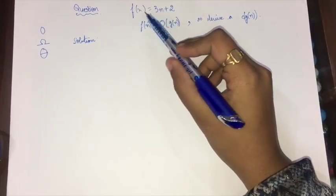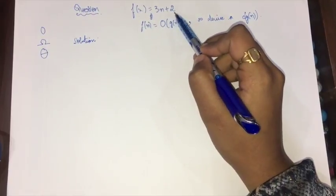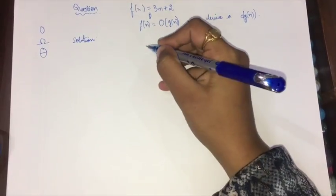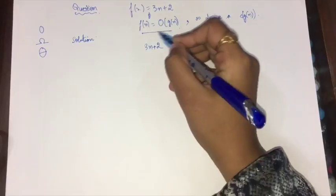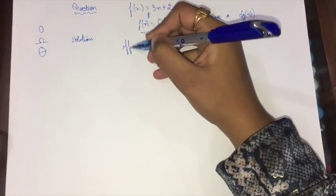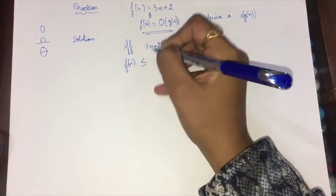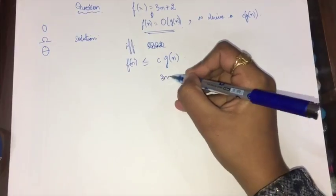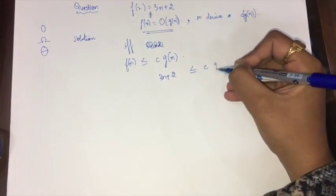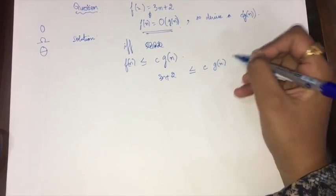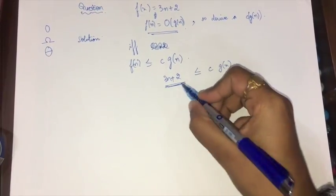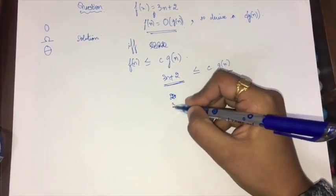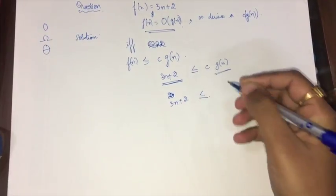If we are given a function f(n) = 3n + 2 and we have to find g(n), how will we find it? We know the condition for Big-O to be satisfied is if and only if f(n) is less than or equal to some constant c times g(n). So 3n + 2 must be less than or equal to c·g(n). Since f(n) is linear, g(n) is also going to be linear — that is, 3n + 2 ≤ c·n.